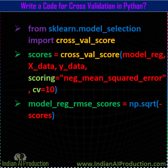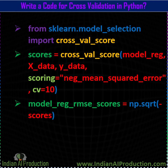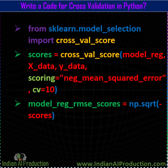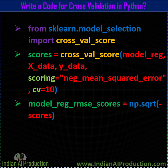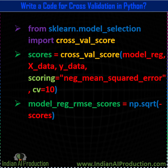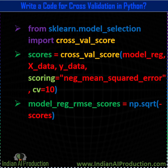The first parameter is your machine learning model — it's a regression model. Next, you have to pass x_data, then y_data, which is the label for your x dataset. Next, you have to pass a scoring matrix; here we are going to use negative_mean_squared_error as the performance metric.